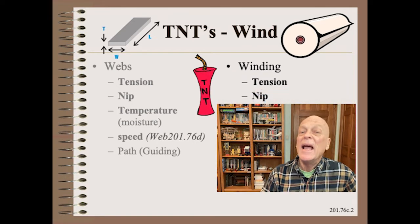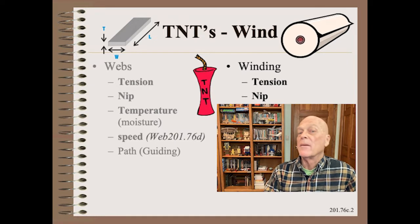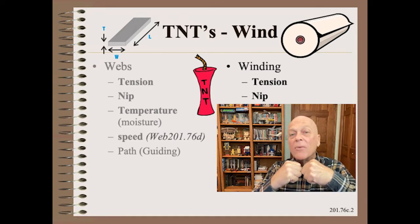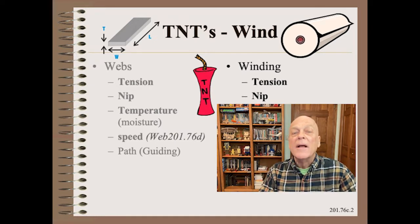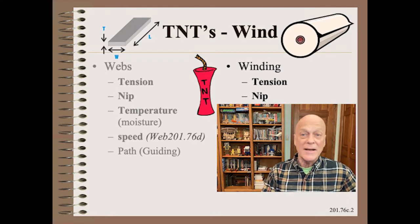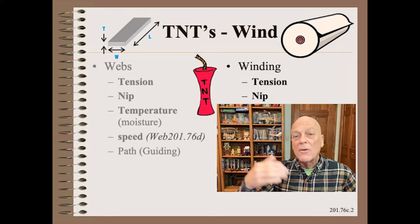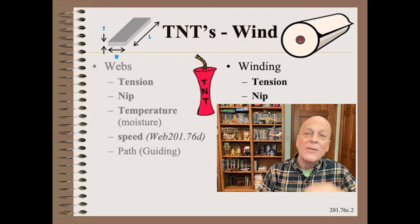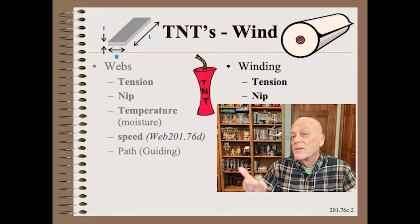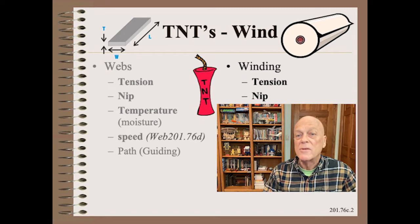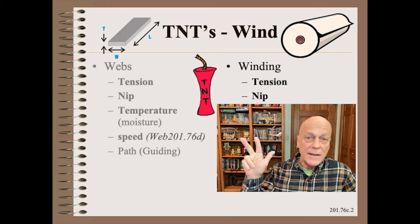The N stands for nip between a roller and a winding roll. The roller may be called different things, such as lay-on roller, rider roller, pack roller, drum, and so on. Some winders have no nip rollers. Most have one, and a few have as many as three.